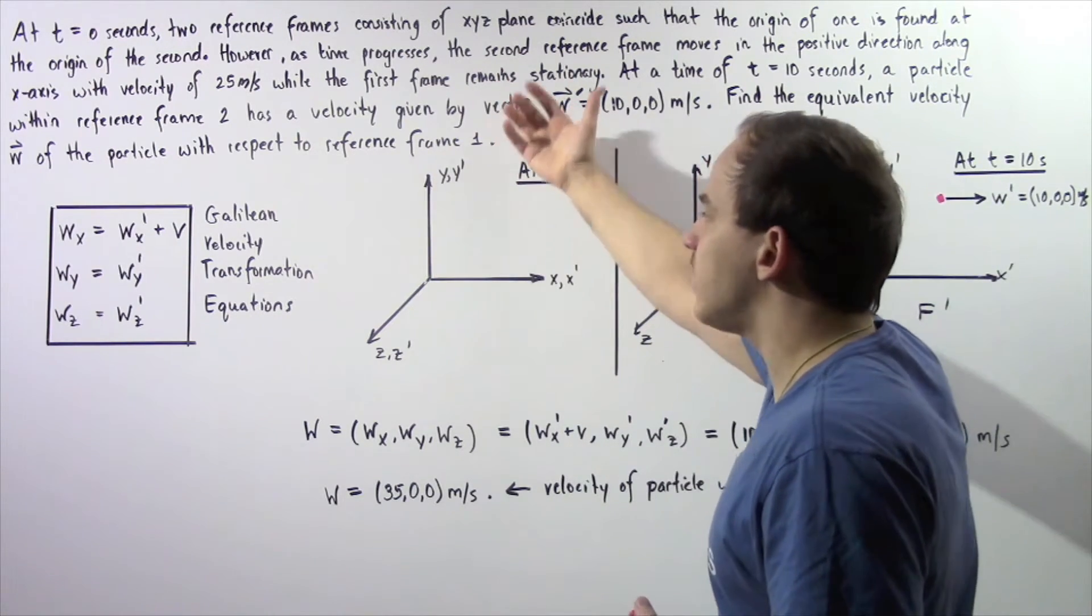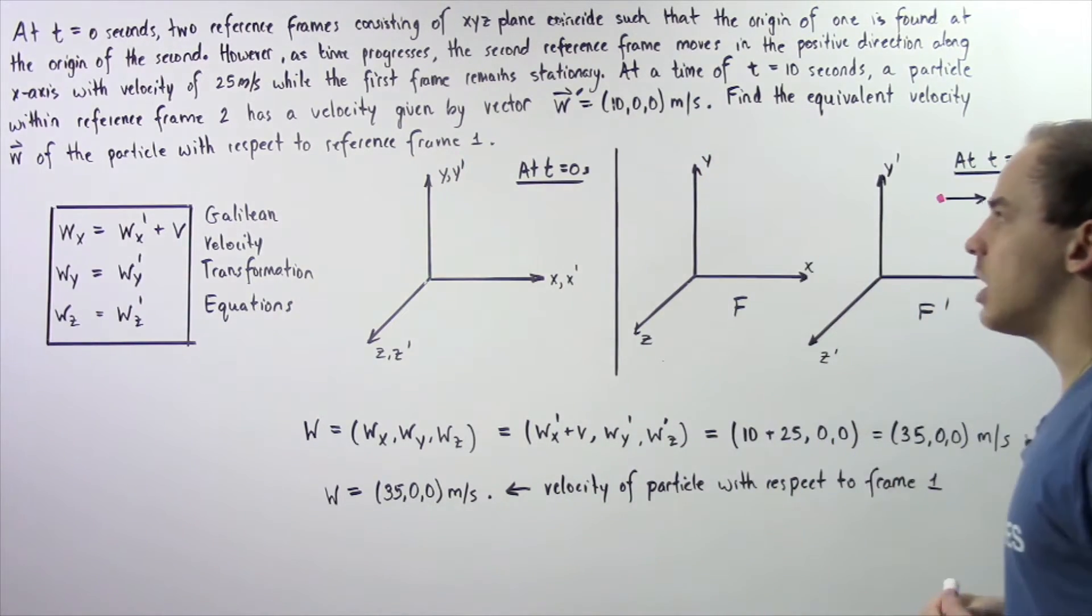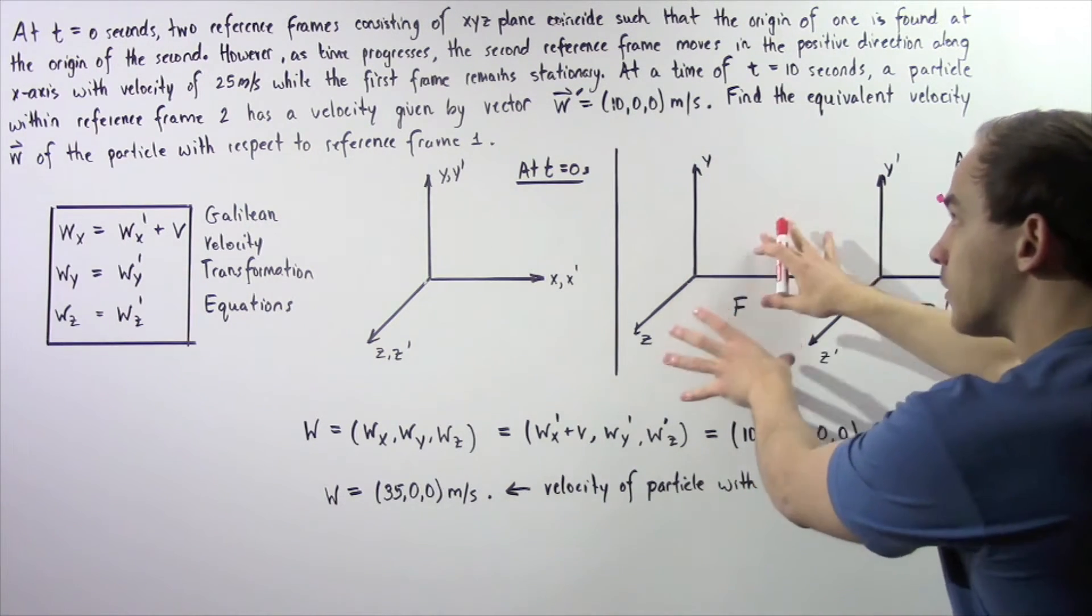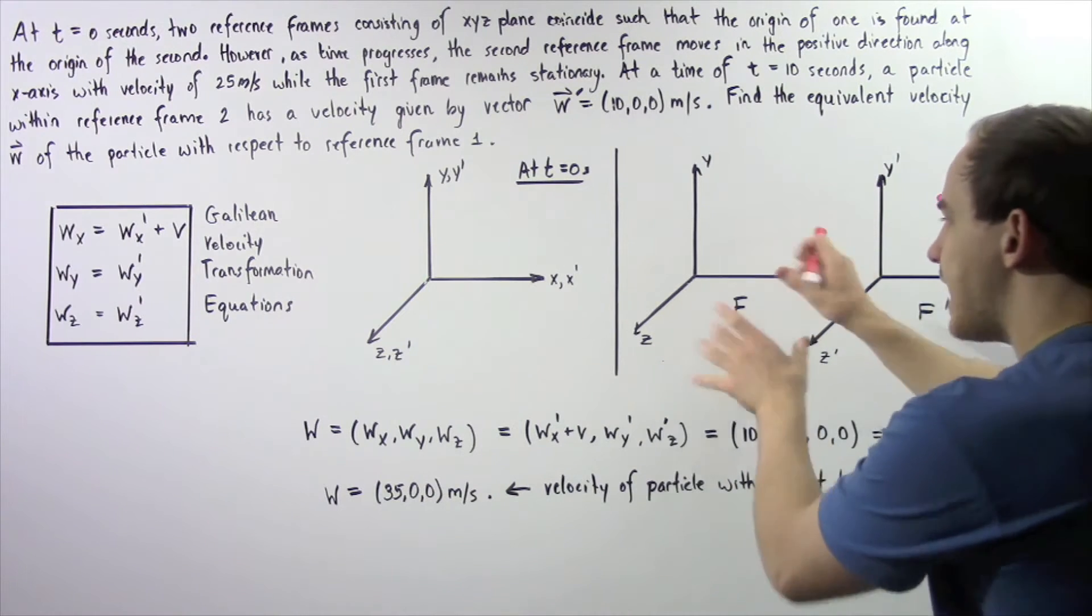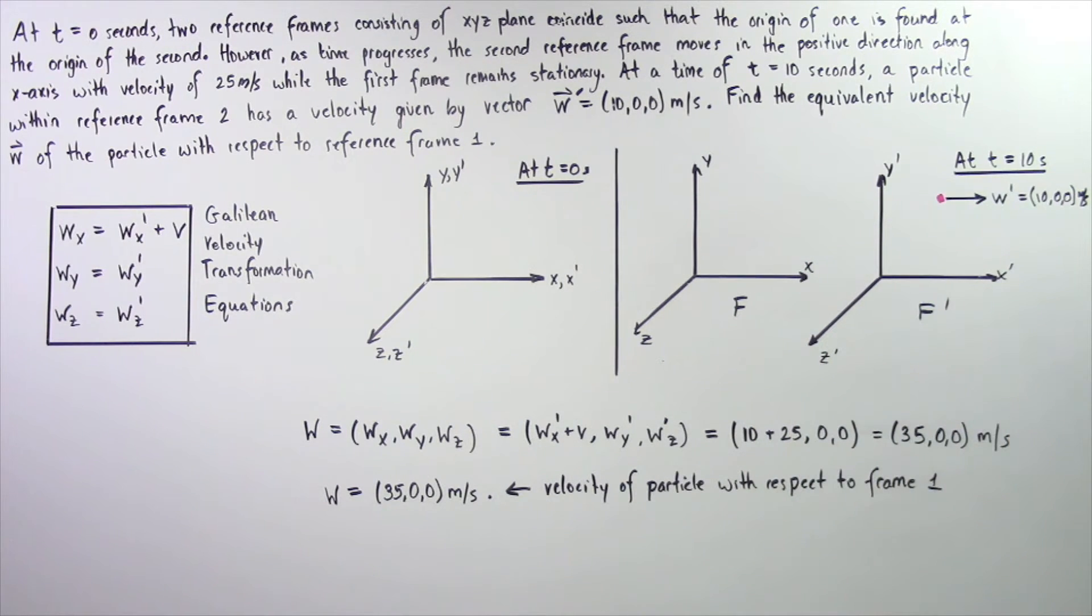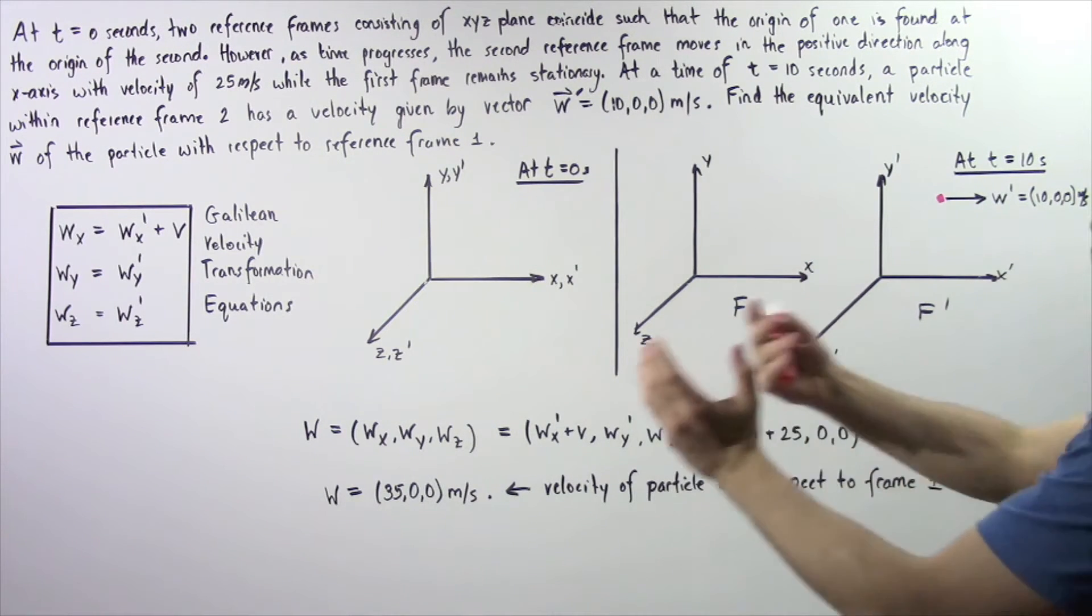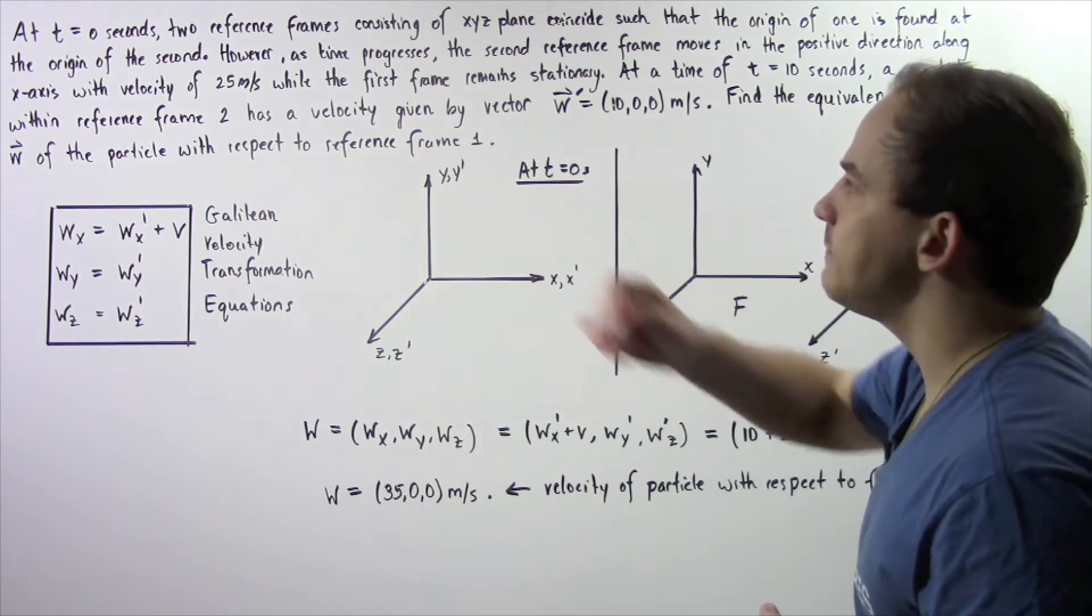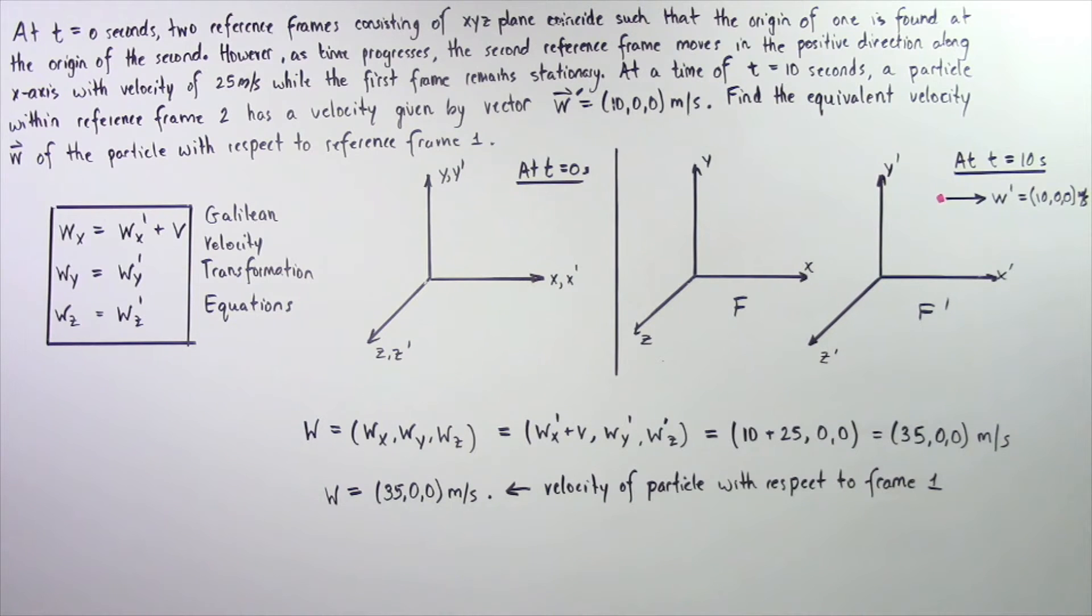And the origin of one lies on top of the origin of the second one. Now, at a time of t seconds, f, the first reference frame remains stationary while the second reference frame f prime moves to the right with a velocity of 25 meters per second. Now at this moment in time,